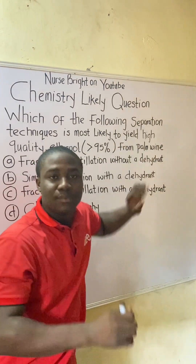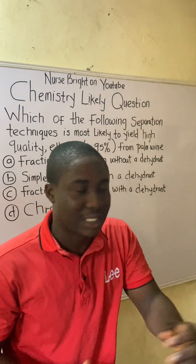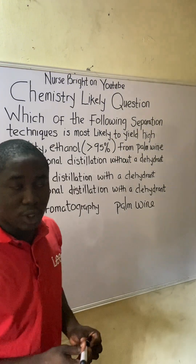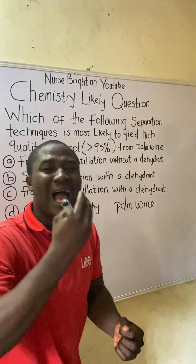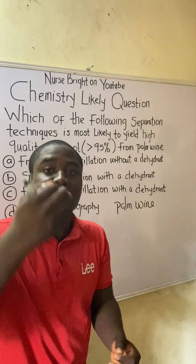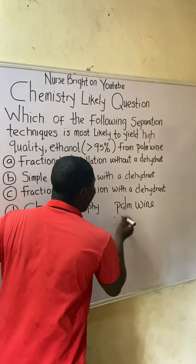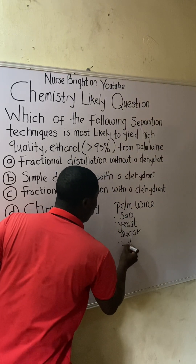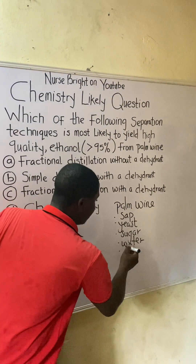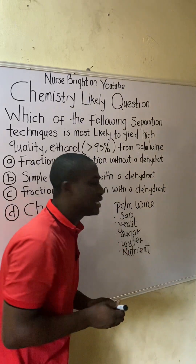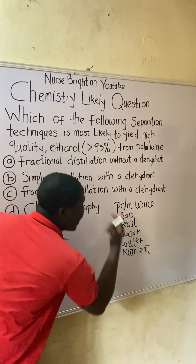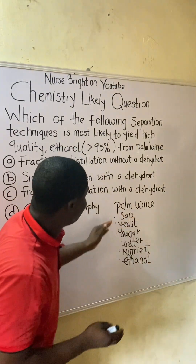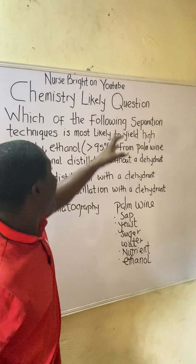Palm wine is gotten from the sap of palm trees. It is a traditional alcoholic beverage made up of different components: sap, yeast, sugar, water, nutrients in the form of vitamins, and lastly ethanol — which is an alcohol in organic chemistry. These are all key components of palm wine.